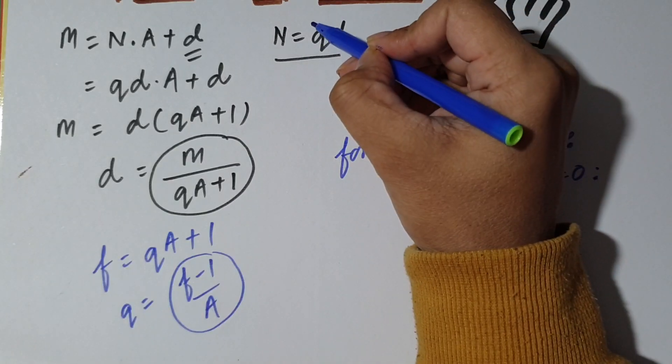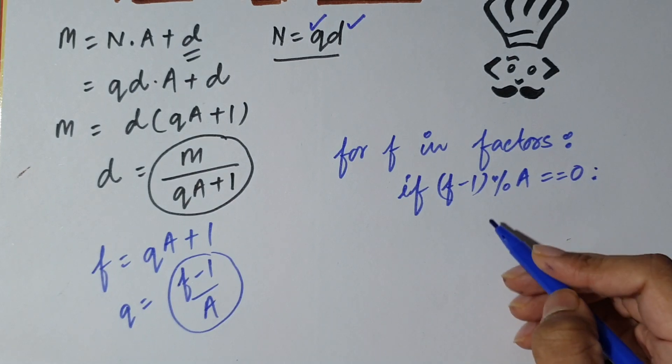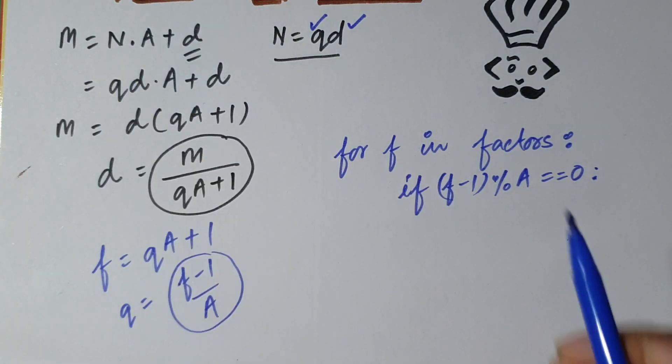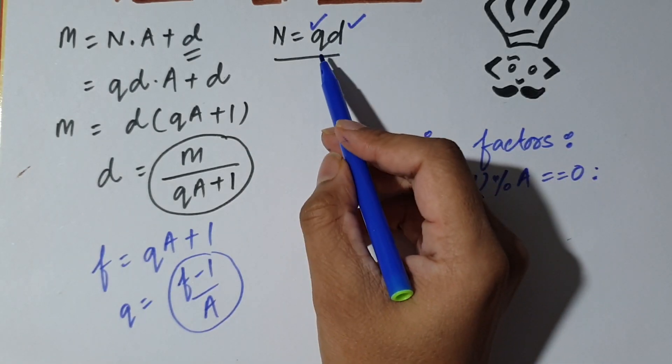So now both the conditions are met. Q is an integer and d is also an integer. Now what we do is now we want to find N. So what is N? N is Q into d. So we need to find Q and d.